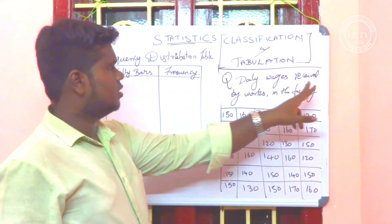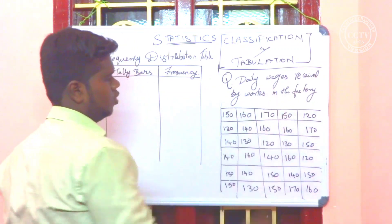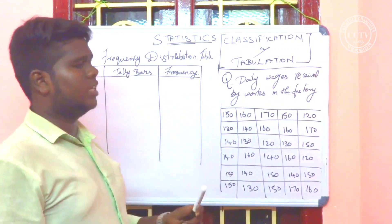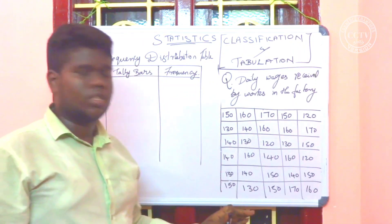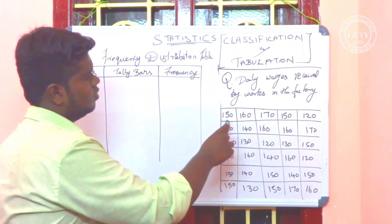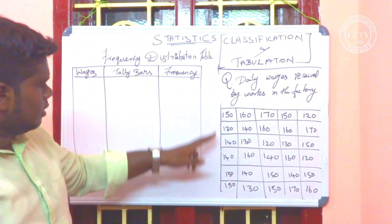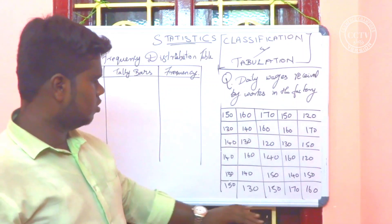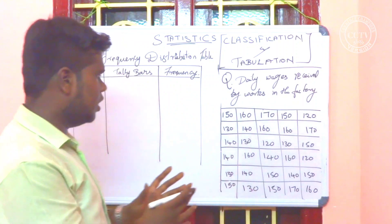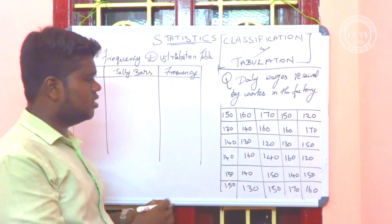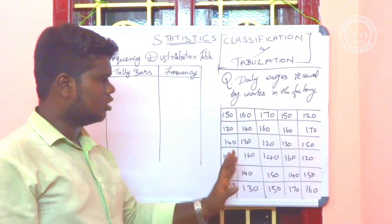The question is: daily wages received by workers in the factory. You can find daily wages. There are numbers — there are repeated numbers. There are numbers that appear a little, and some numbers are different.